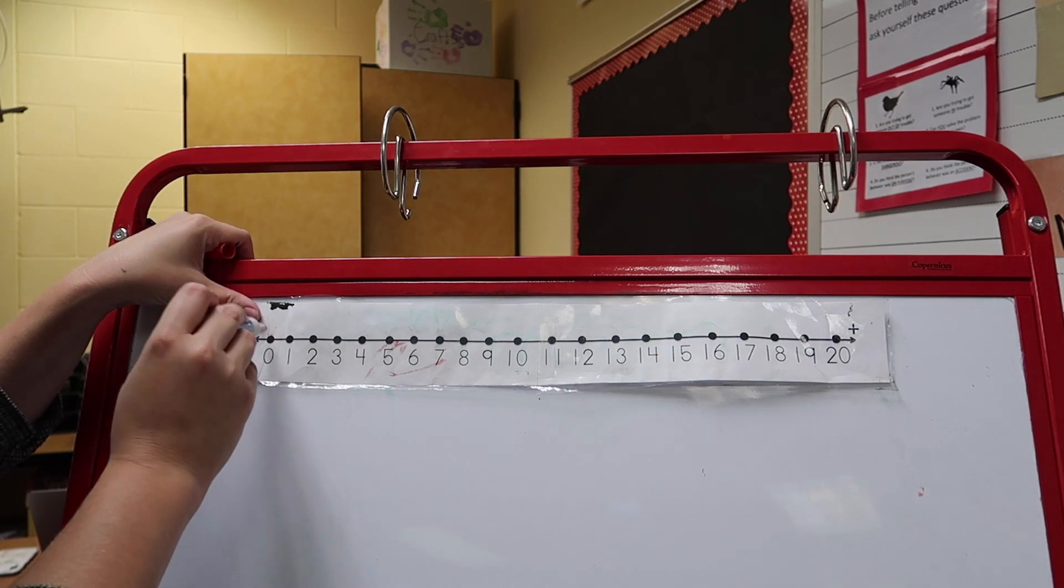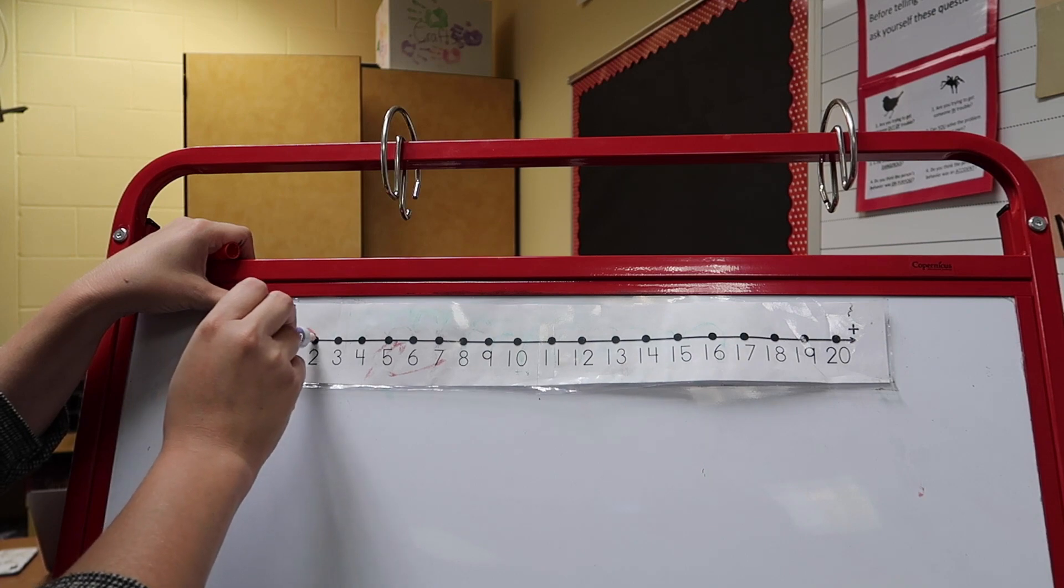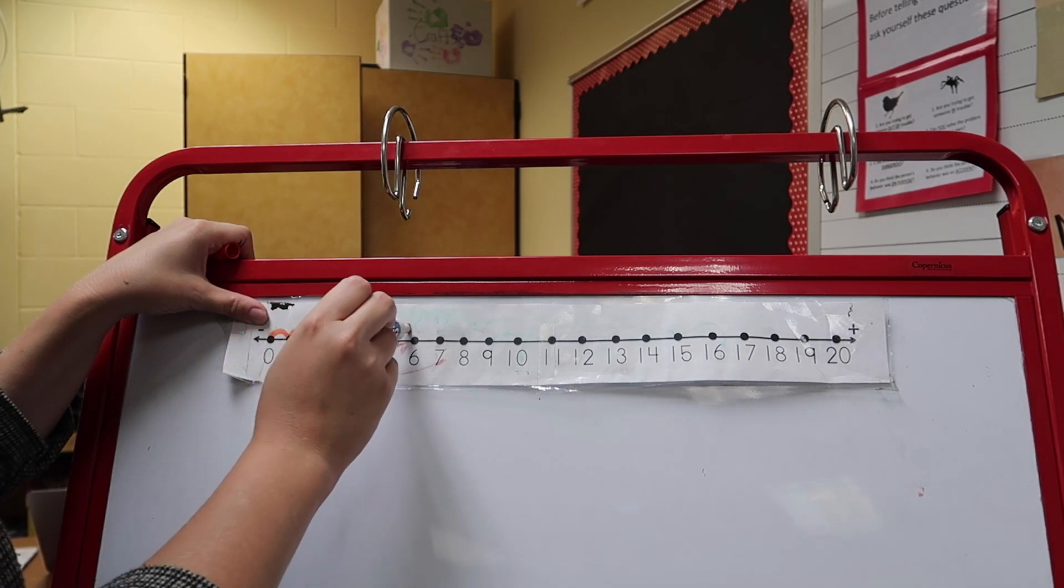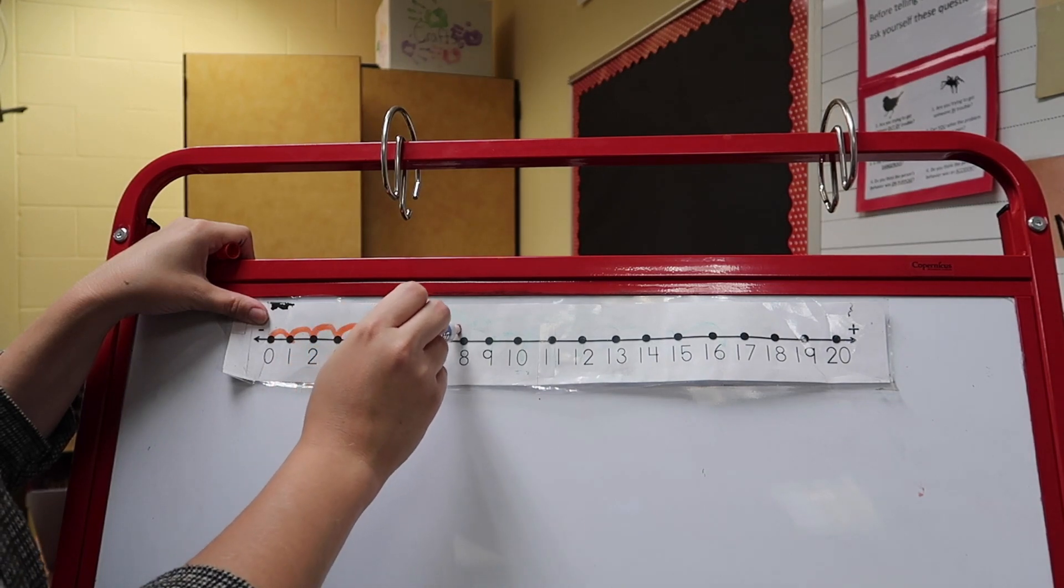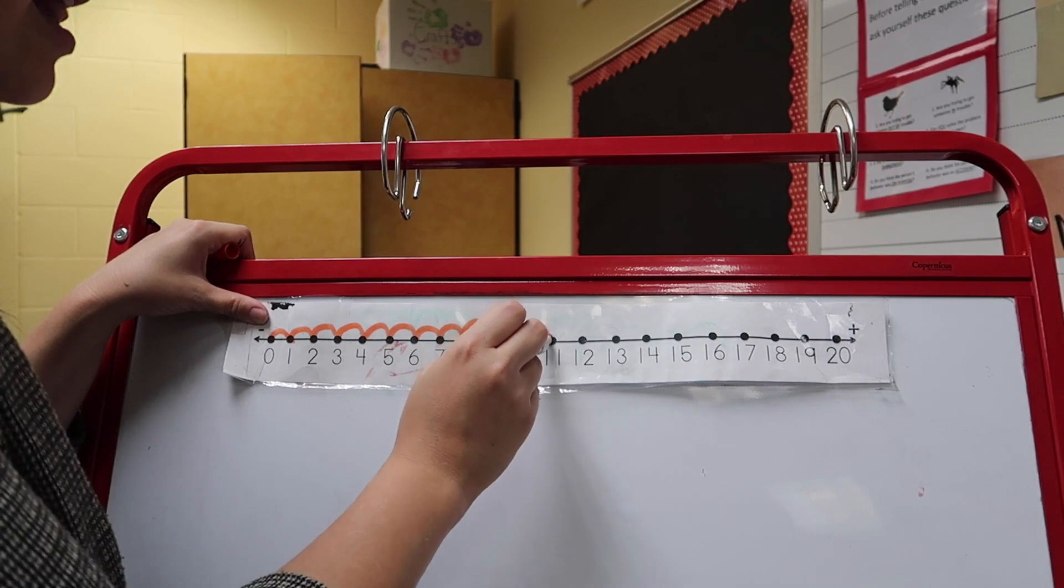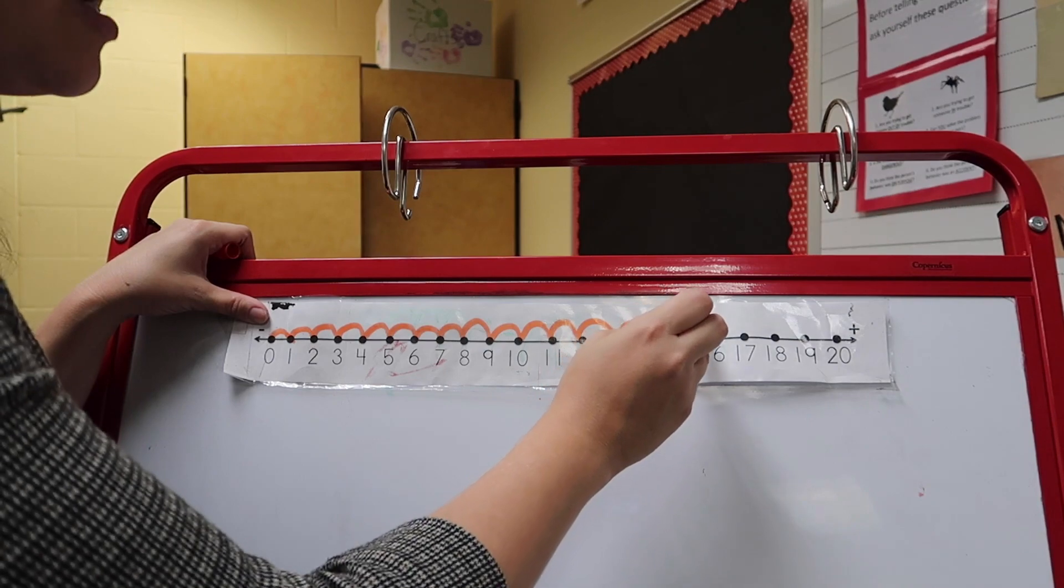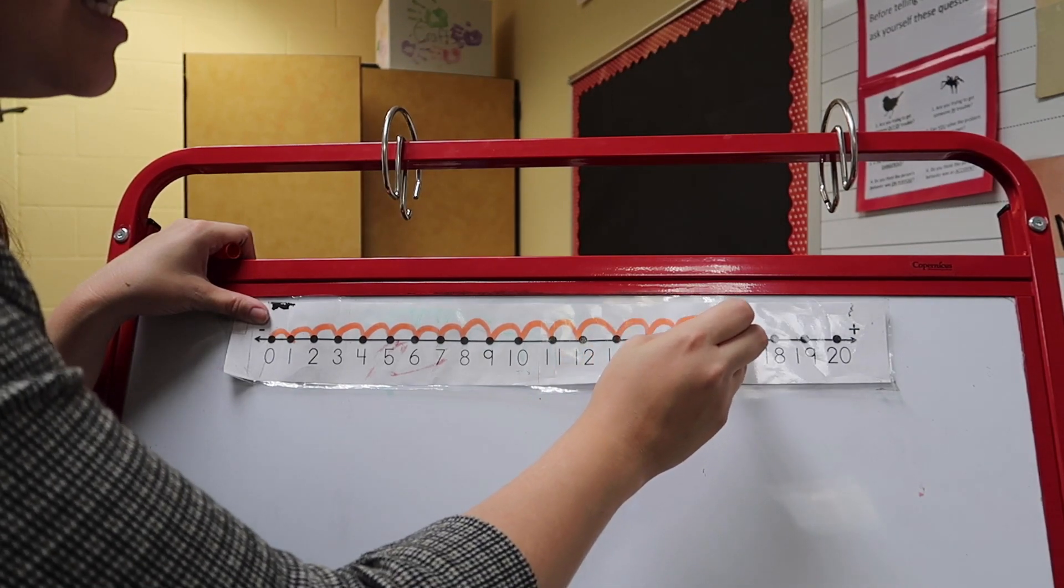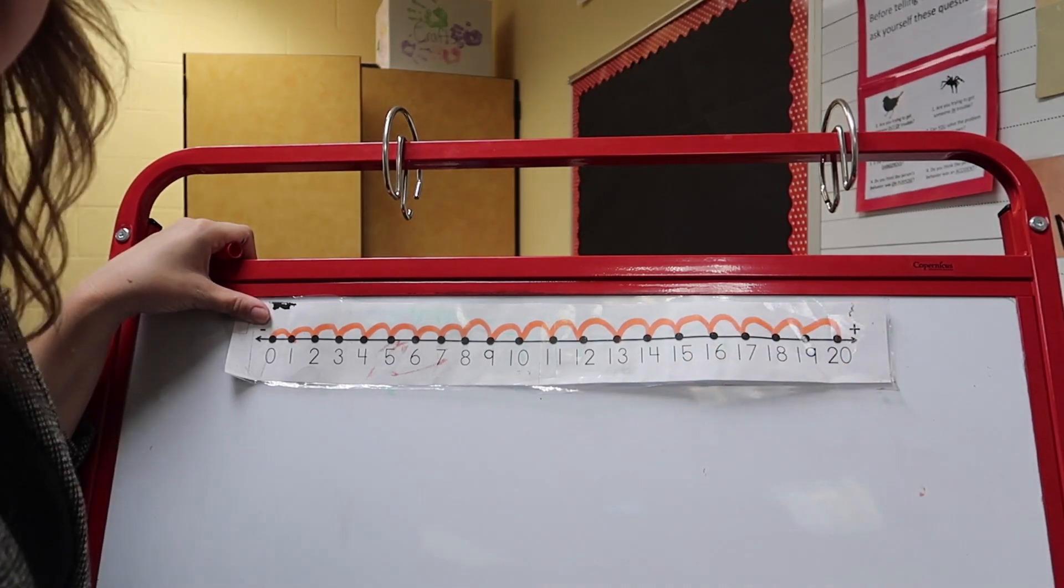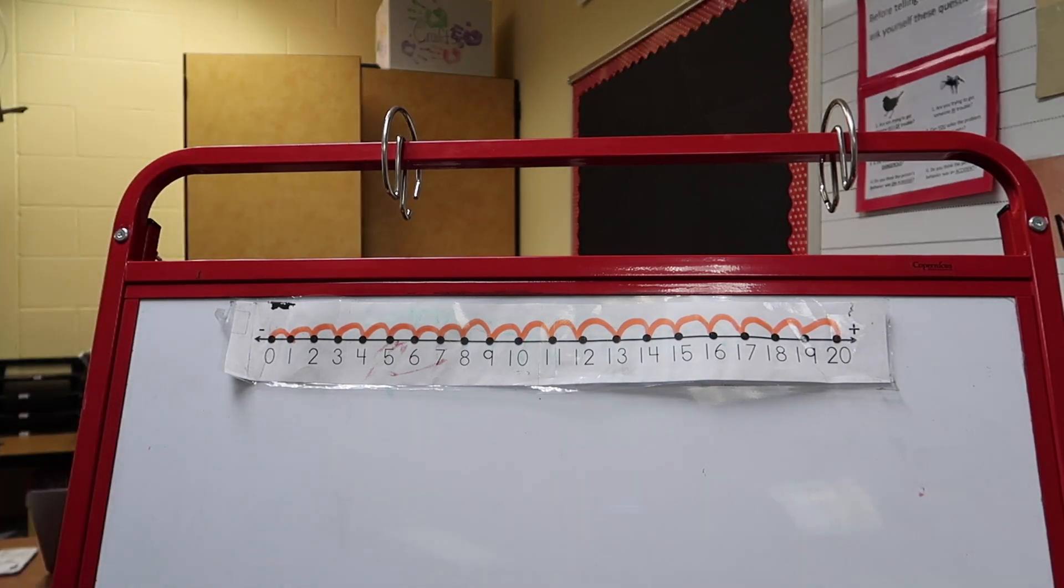Ready? We're going to start at zero. Why don't you count with me while I'm bunny hopping? Here we go. Ready? Jump one, jump two, jump three, jump four, jump five, jump six, jump seven, jump eight, jump nine, jump ten, jump eleven, jump twelve, jump thirteen, jump fourteen, jump fifteen, jump sixteen, jump seventeen, jump eighteen, jump nineteen, jump twenty. And that's as far as you can go. You can't go much taller than or much bigger than twenty on this one.